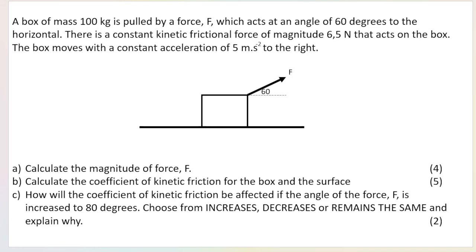It says a box of mass 100 kilograms is pulled by force F — we don't know that — acting at 60 degrees to the horizontal. They tell me there's a constant kinetic frictional force; you should know that kinetic frictional force stays constant when an object is moving. Its magnitude is 6.5 newtons, acting parallel to the surface in the opposite direction — so 6.5 newtons to the left, because the box is moving to the right. The box moves with a constant acceleration of 5 meters per second squared to the right.